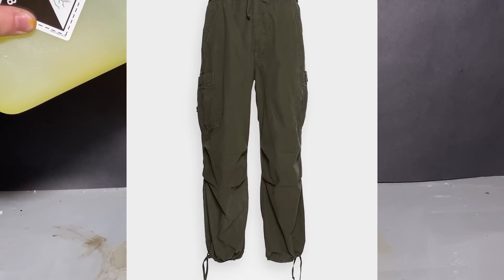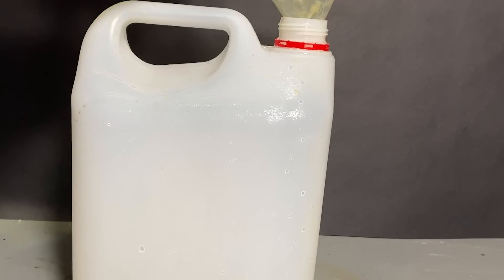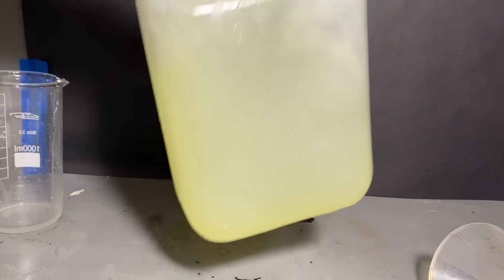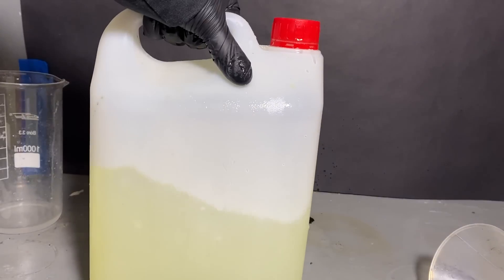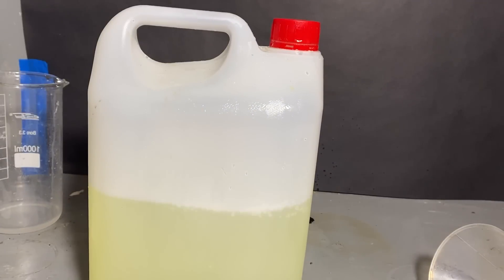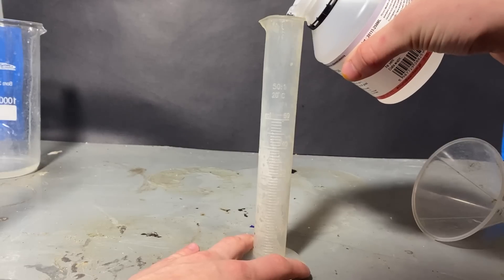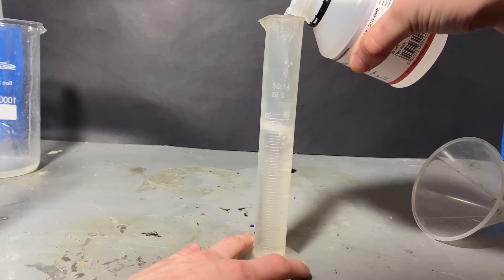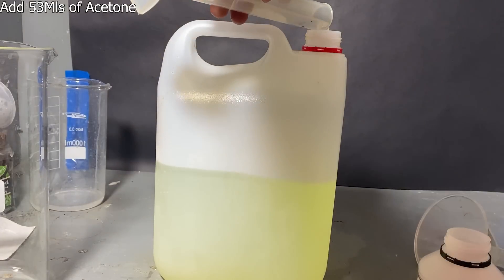Then I've transferred all the bleach into this plastic container and diluted it with a bunch of water. Then I've sloshed it around and put it into a freezer until it reached sub-zero temperatures. The sub-zero temperature part is key. A few hours later, and the bleach is cooled to around minus 3°C. Then in one fell swoop, I've added around 53 ml of acetone into the mix.